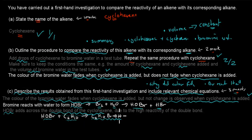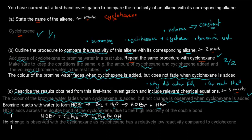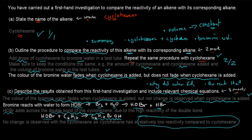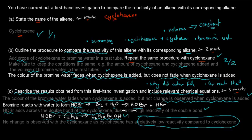That's why we see the fading colour for cyclohexene. You also have to explain why there is no fading for cyclohexane: no change is observed because cyclohexane has relatively low reactivity compared to cyclohexene — it has no double bond, so nothing adds across it, and bromine stays in solution. You get one mark for the observation, marks for the chemical equations, and marks for correctly identifying why it happens.